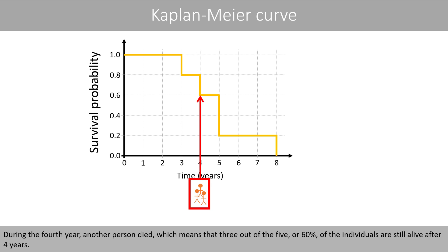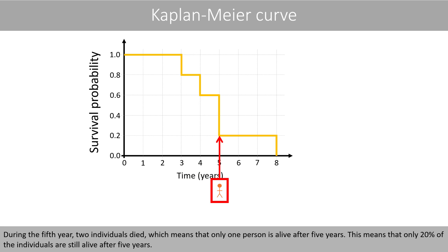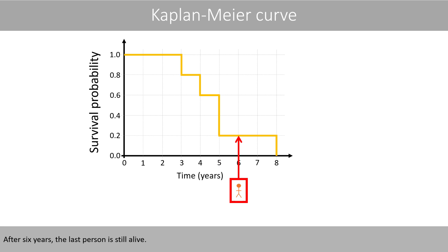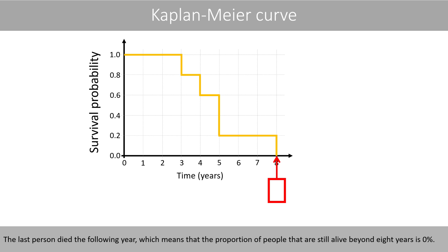During the fourth year, another person died, which means that 3 out of 5, or 60% of the individuals are still alive after four years. During the fifth year, two individuals died, which means that only one person is alive after five years — only 20% of the individuals are still alive after five years. After six years, the last person is still alive. The last person died the following year, which means that the proportion of people still alive beyond eight years is 0%.